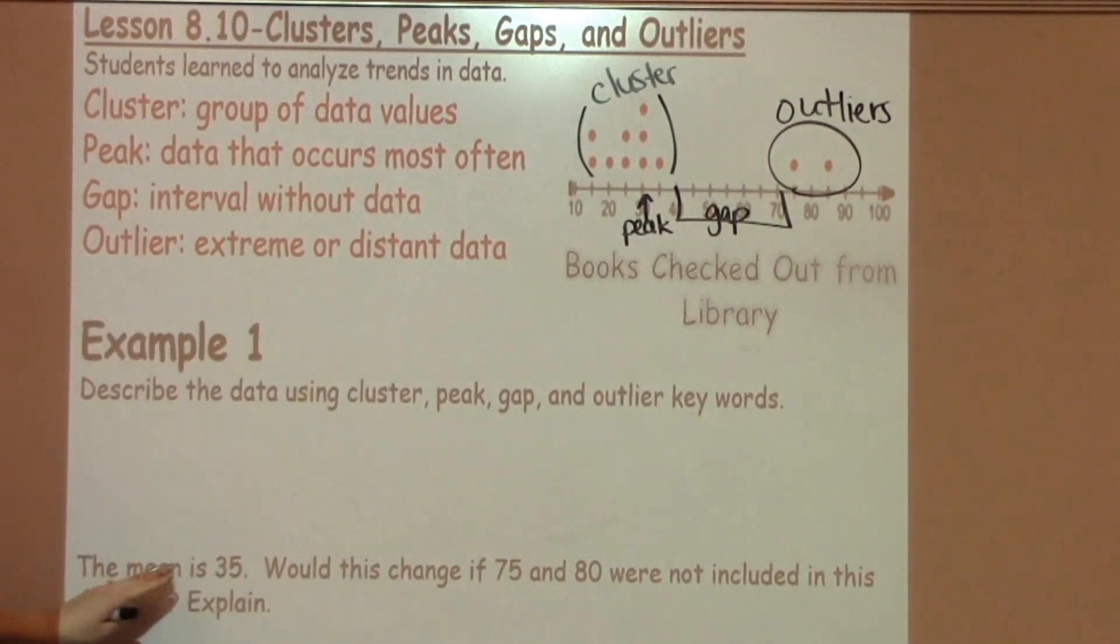The second part of this question says the mean is 35. Would this change if 75 and 80 were not included in the data set? Explain.